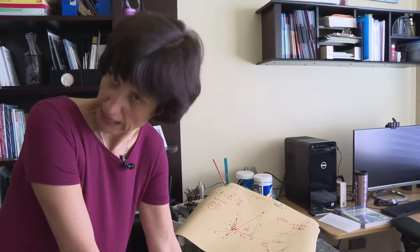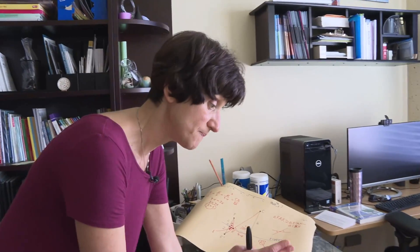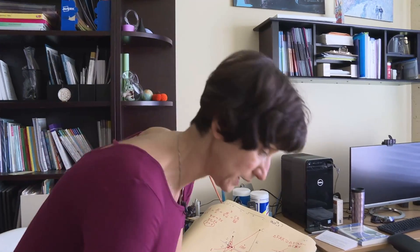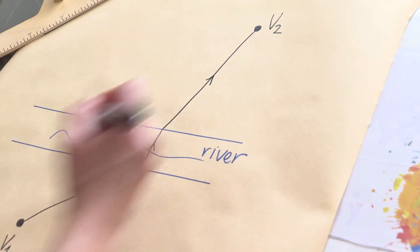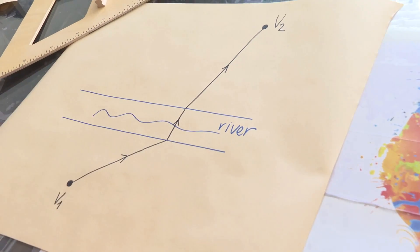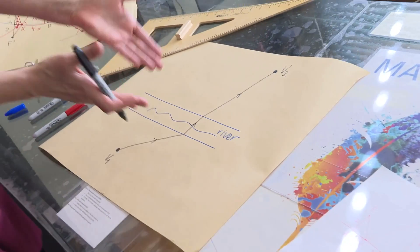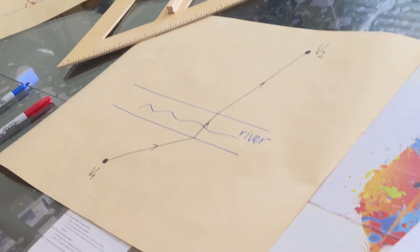And the bridge has to be perpendicular. Otherwise, you can just connect the two villages. But the bridge is very expensive material. So you want to minimize the length of the bridge and then you walk to village two. So where should they build this bridge? We assume that it's the same expense anywhere down the river as long as it's perpendicular. The river has the same width.